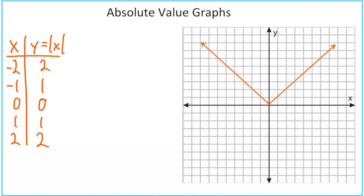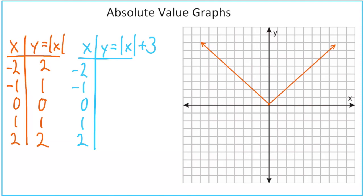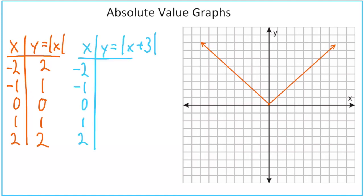Now what would happen if we add something to our absolute value of x? For instance, y equals absolute value of x plus 3. This takes all of our previous answers and adds 3: 2 plus 3, 1 plus 3, 0 plus 3, and so on. When we graph this, the plus 3 on the end moved the graph up three spaces.